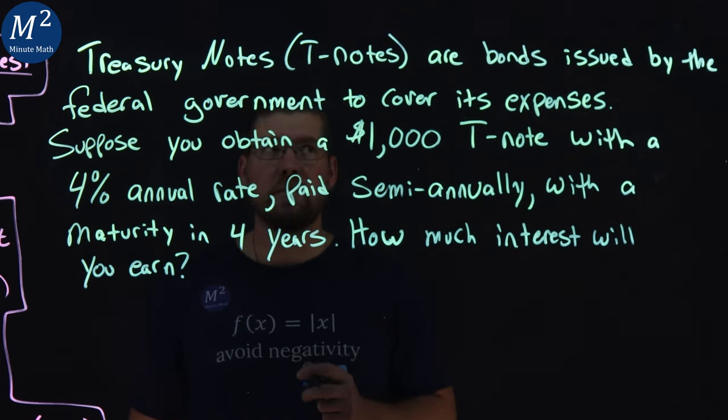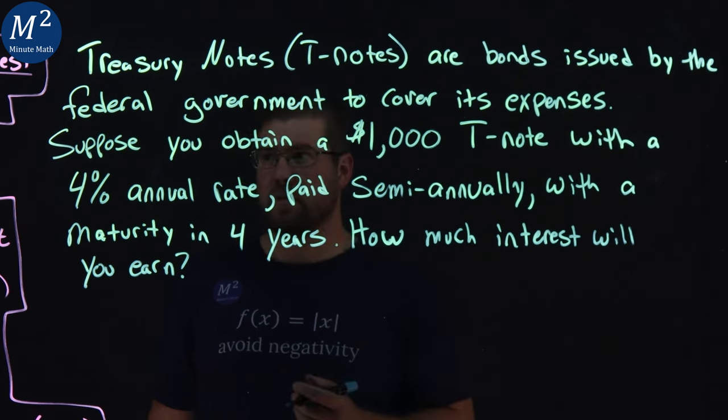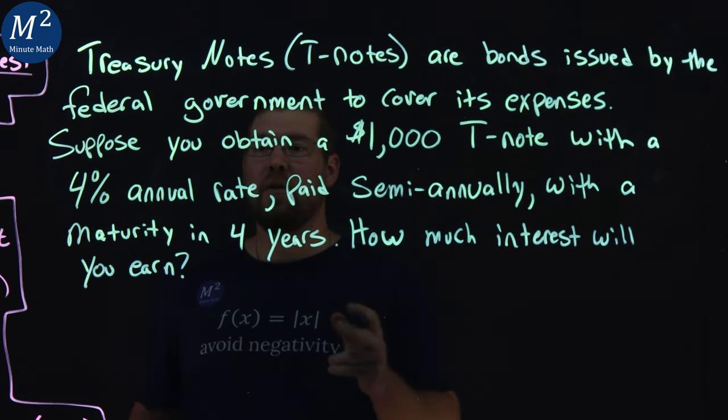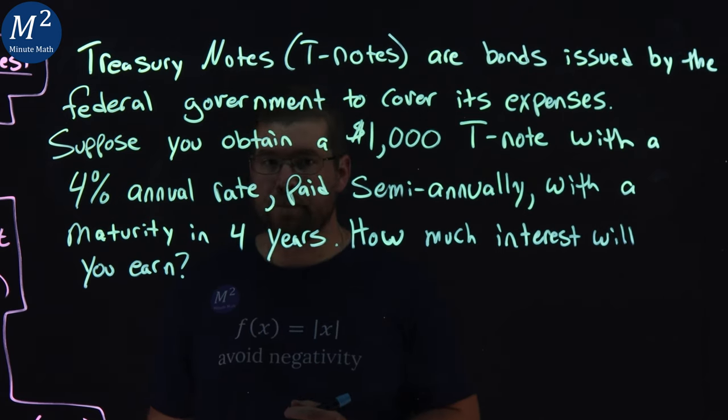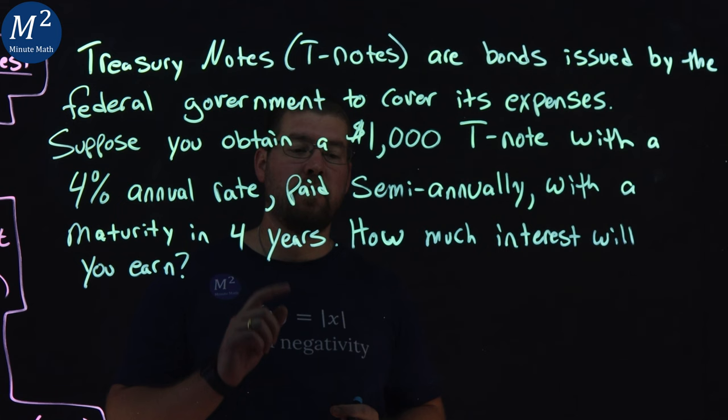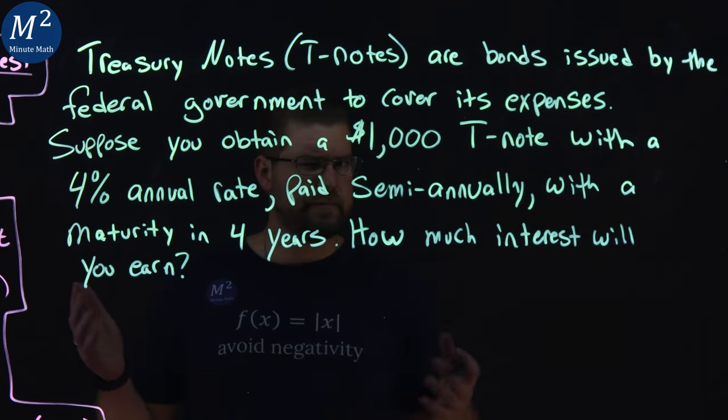Treasury notes, or T-notes, are bonds issued by the federal government to cover its expenses. Suppose you obtain a $1,000 T-note with a 4% annual rate, paid semi-annually, with a maturity in four years. How much interest will you earn? Let's learn.